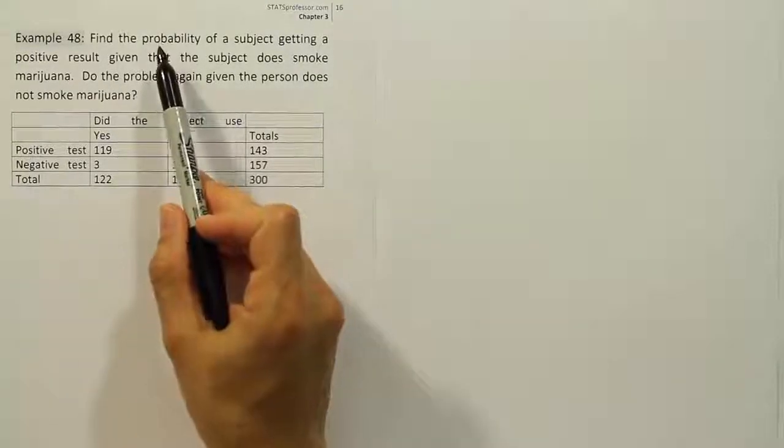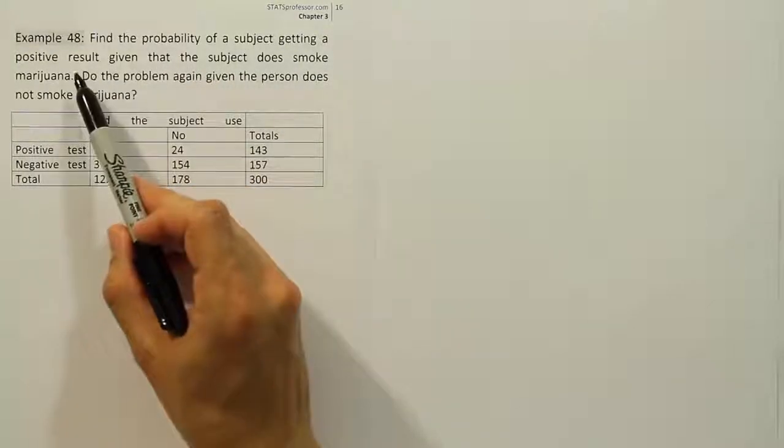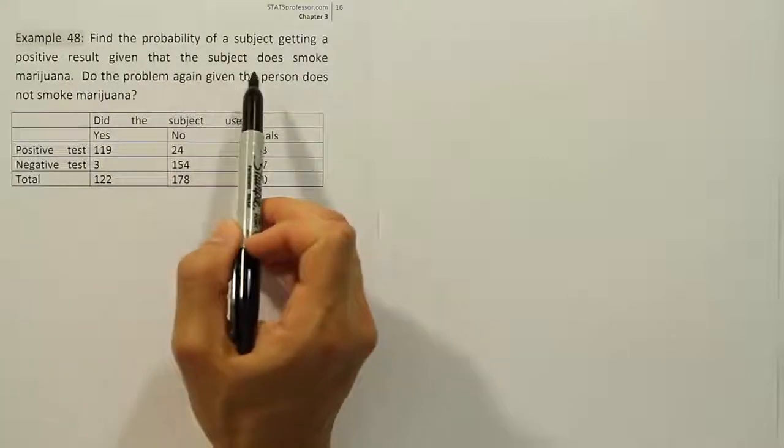Example 48. Find the probability of a subject getting a positive result given that the subject does smoke marijuana.